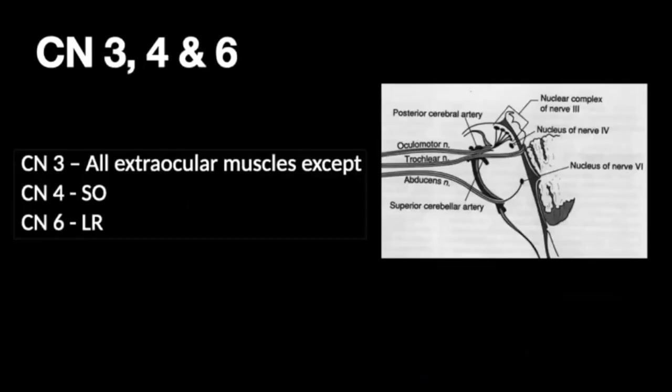The 3rd, 4th and 6th cranial nerves supply the extraocular muscles. All muscles are supplied by the 3rd cranial nerve except the superior oblique, which is supplied by the 4th, and the lateral rectus, which is supplied by the 6th cranial nerve. This schematic shows the nuclear, parenchymal and cisternal segments of these nerves.